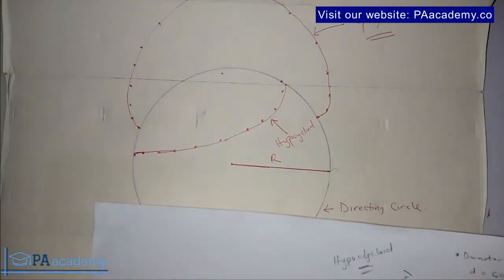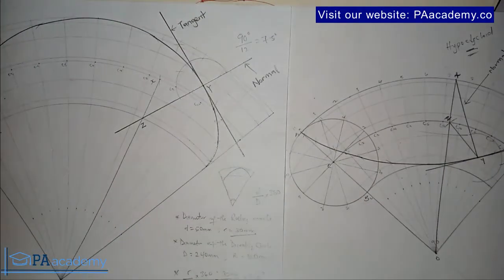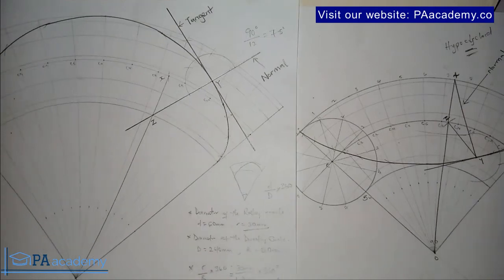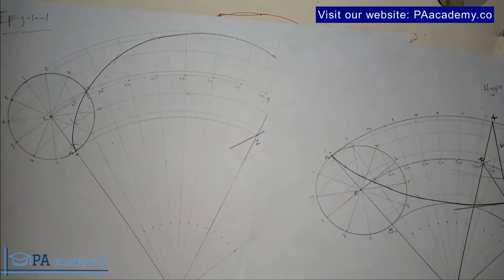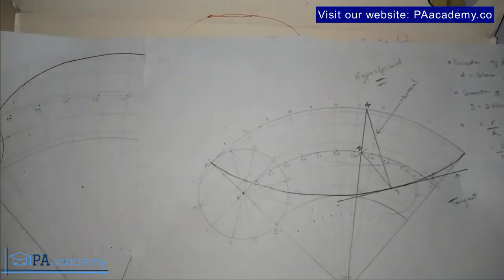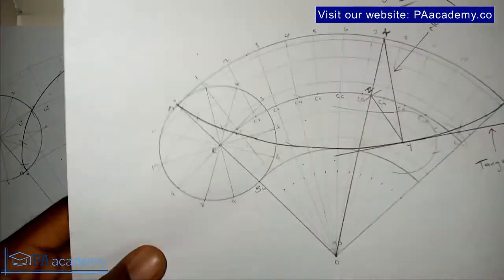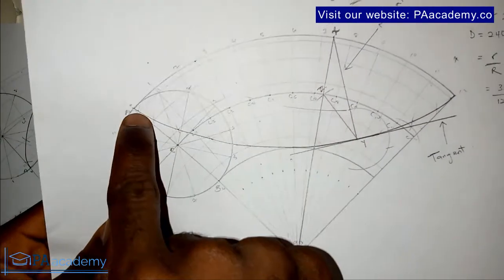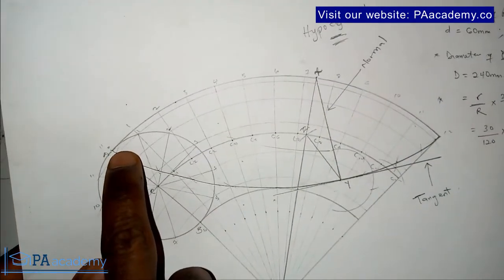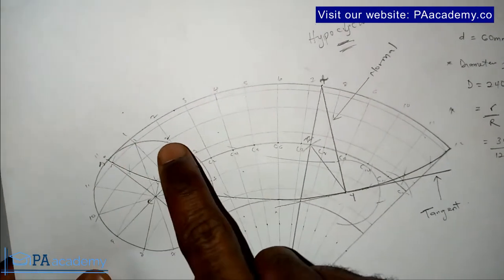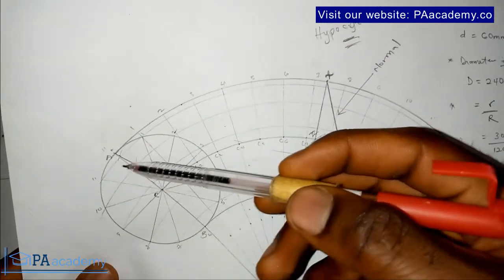If you are finding value in this video, please give it a thumbs up. Now let's look at these two drawings and the differences. One major difference when drawing epicycloid and hypocycloid is this: for hypocycloid, if you look at the rolling circle after dividing it into 12, you number it starting from the top in a clockwise manner — 0, 1, 2, 3, 4, 5, 6, 7 and so on. It starts from the top in a clockwise direction. This is for hypocycloid.